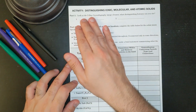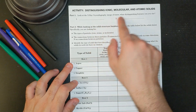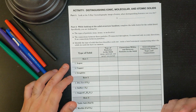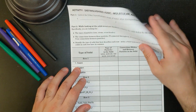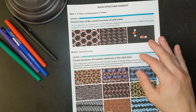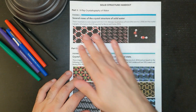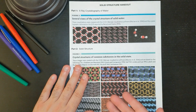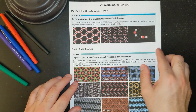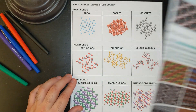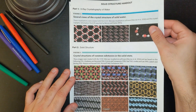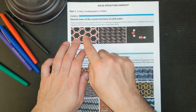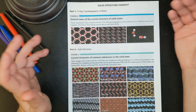We're going to start with looking at the x-ray crystallography image of water. You have this handout that's linked in the documents as to our activity. You also have this handout that says solid structure handout. This is something that we would be doing in class, but now I have all of the images right into this handout. It's a two-page handout where you could do back and front. We're going to start with the front, which is Part 1: X-Ray Crystallography.